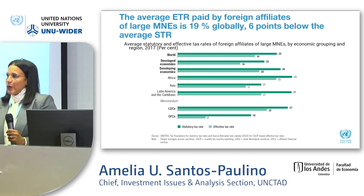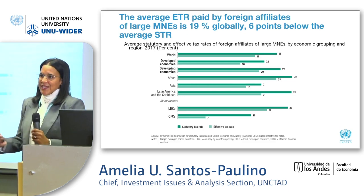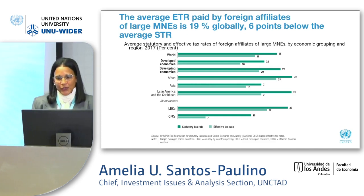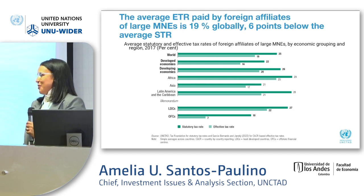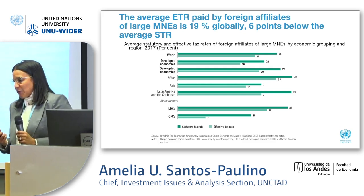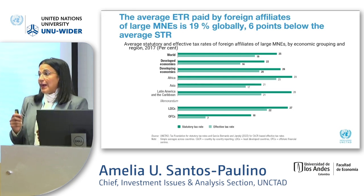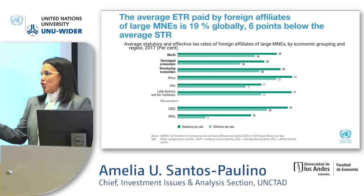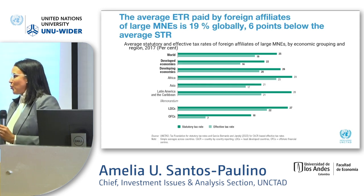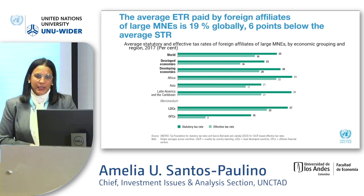We also look at what we call offshore financial centers because they are the ones that stand to lose when the reforms come in. This is what this reform is about: to avoid profit shifting and to redistribute income to the host country. Something important from our analysis is that differences in statutory rates remain one of the most important factors in explaining the variation in effective tax rates. A key message is that the effective rate is way below the statutory rate.